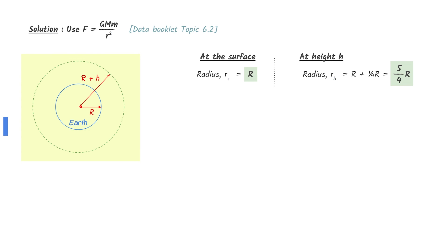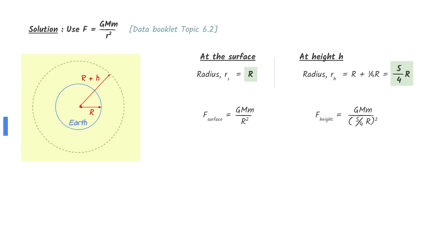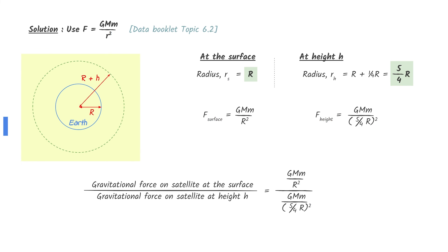The key word here is above the Earth's surface. This means that the total radius when the satellite is in space is 5 over 4h. Use the equation given in the data booklet to derive an equation for the surface and at height h. Divide them together, cancel out, and simplify to find your answer.